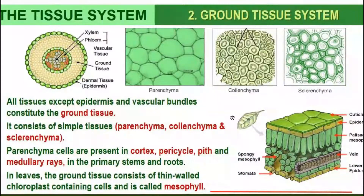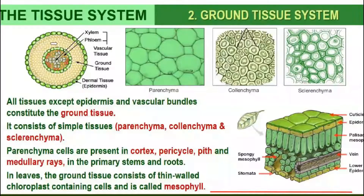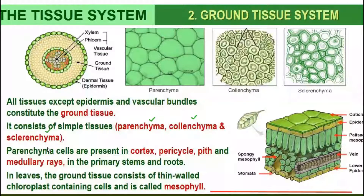Below the epidermal tissue system is what is commonly called the ground tissue system. The ground tissue system is made up of simple tissues: parenchyma, colenchyma, and sclerenchyma. Parenchyma cells are found in the cortex.